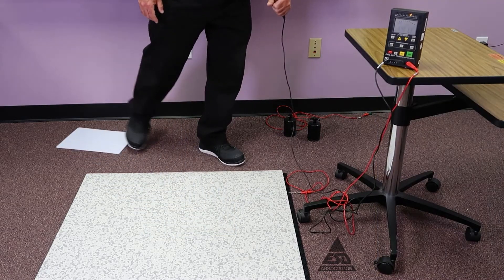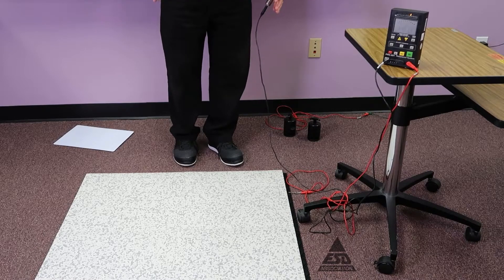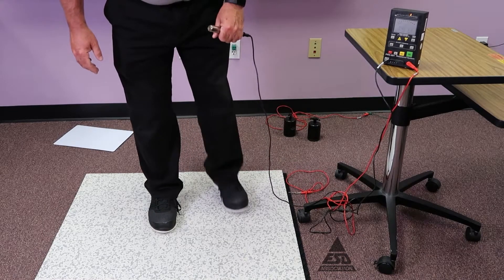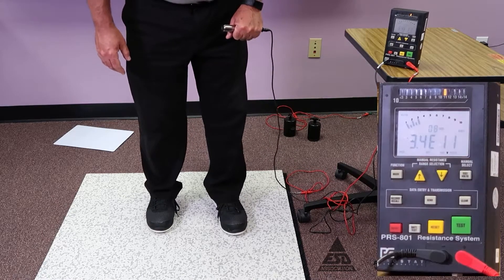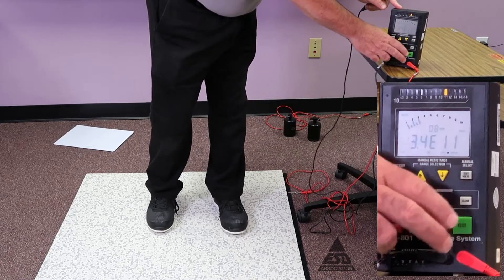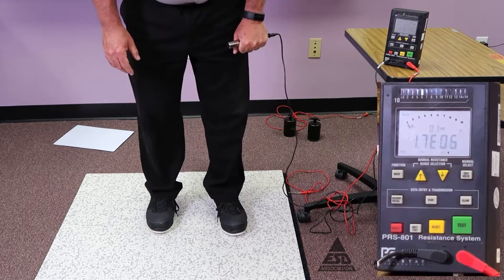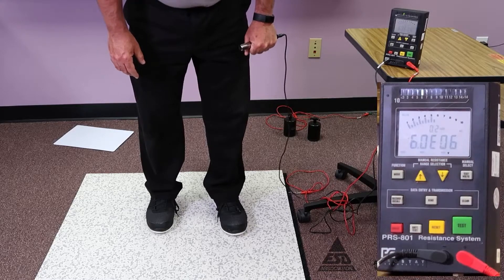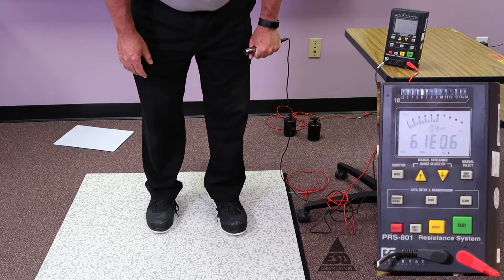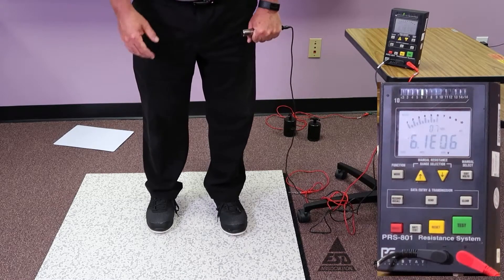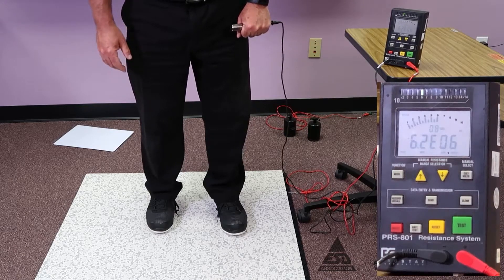So I step off, take the insulator off. First measurement you make is simply with both feet on the ground. You can see it's just over 10 to the 6th. That means it made the switch from 10 to 100 volts at 10 to 6.